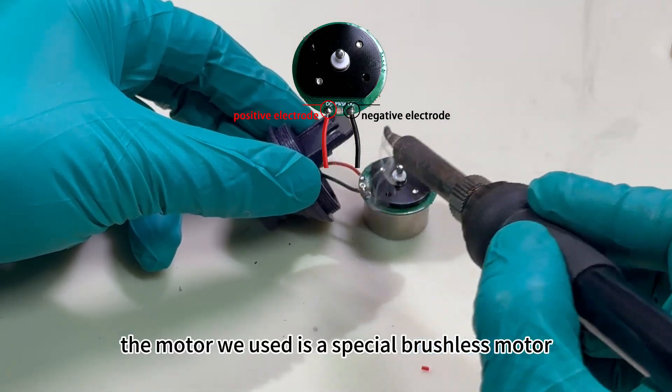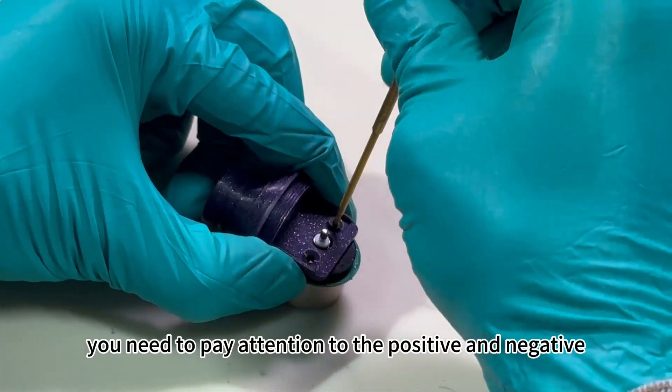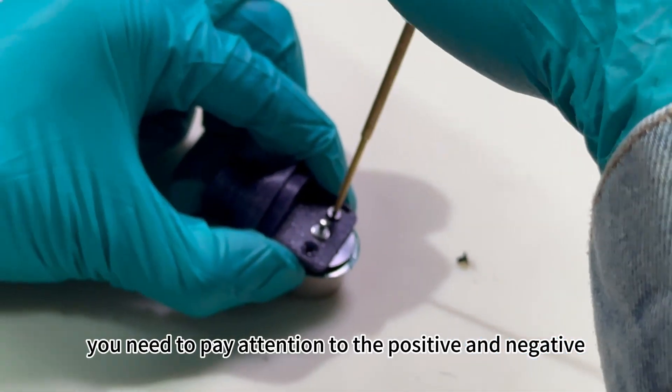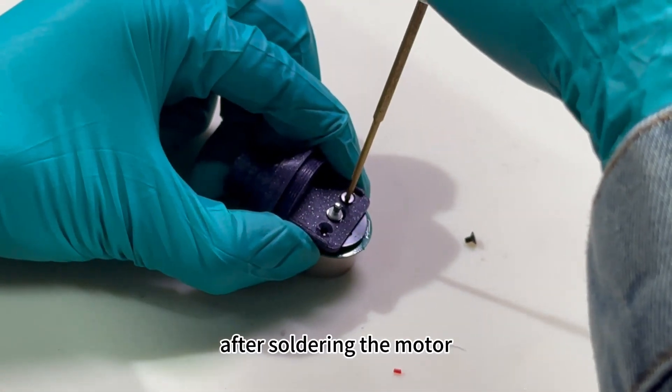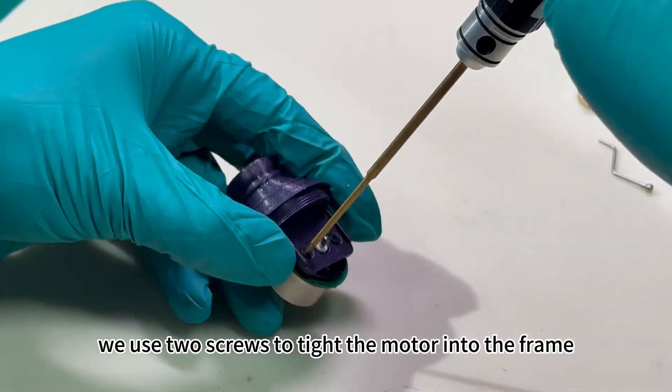The motor we use is a special brushless motor. You need to pay attention to the positive and negative. After soldering the motor, we use two screws to tighten the motor into the frame.